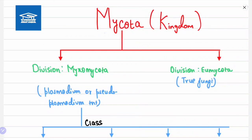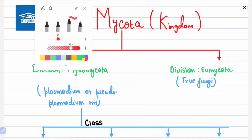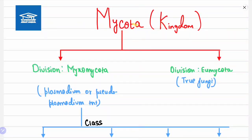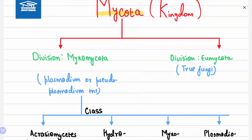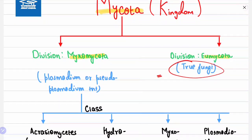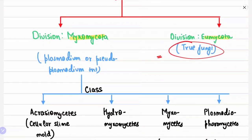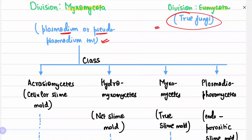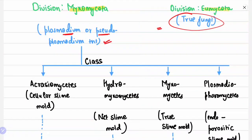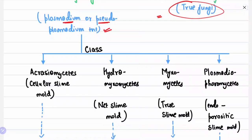Kingdom Mycota has two divisions: Myxomycota and Eumycota. Eumycota, as the term indicates — 'eu' means true — so they are the true fungi. Under Myxomycota comes plasmodium or pseudoplasmodium. The division Myxomycota is further divided into various classes.